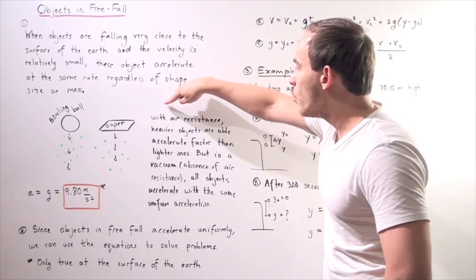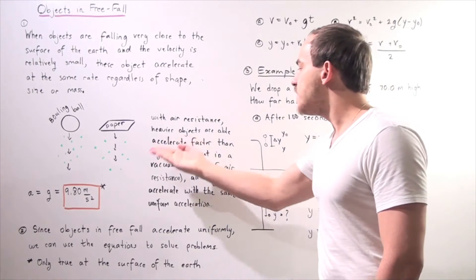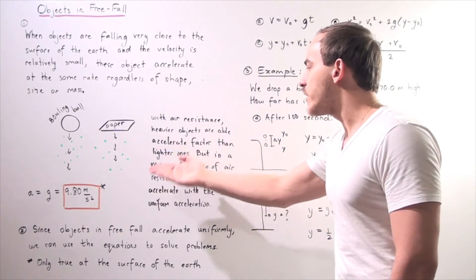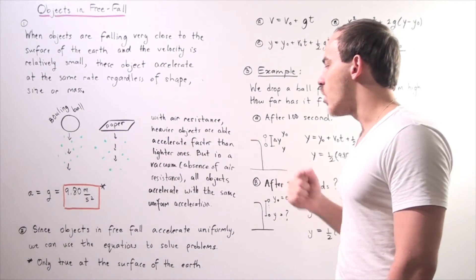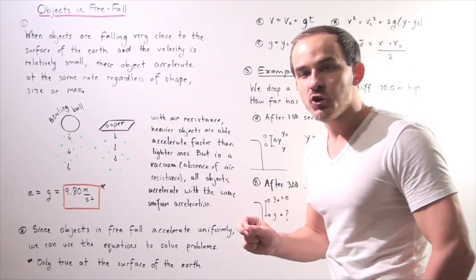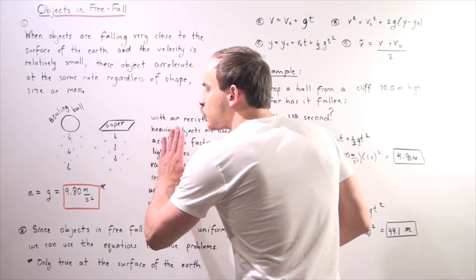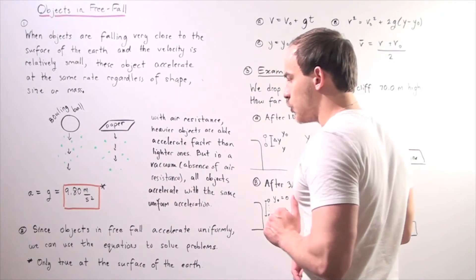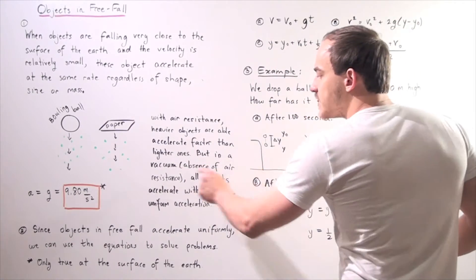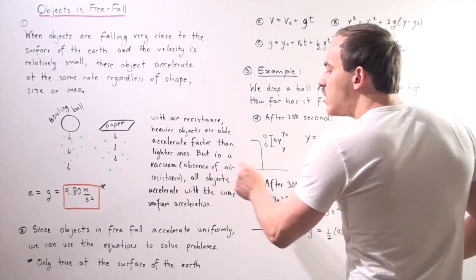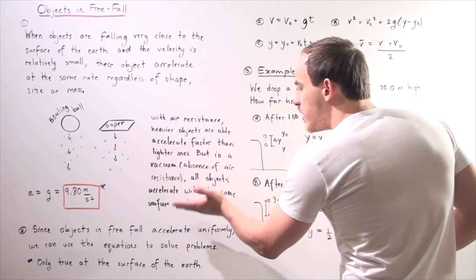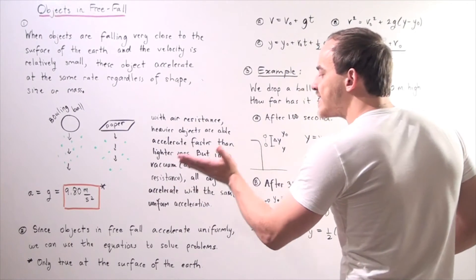So once again, with air resistance, heavier objects are able to accelerate faster than lighter ones. But in a vacuum, if we completely remove all the air molecules, the absence of air resistance, all objects accelerate with the same uniform acceleration.